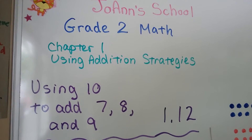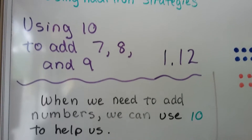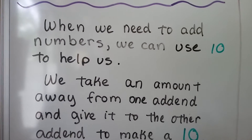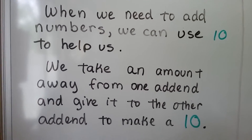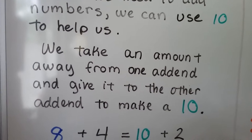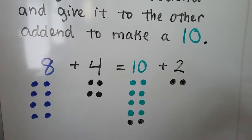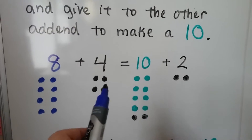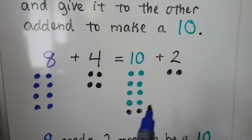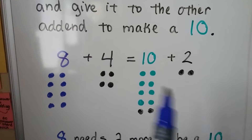Lesson 1.12: using 10 to add 7, 8, and 9. When we need to add numbers, we can use 10 to help us. We saw that in the last video — we can take an amount away from one addend and give it to the other addend to make a 10. If we have 8 plus 4, we can take two counters away from the 4 and give it to the 8. Then we'll have 10 plus 2. It's the same thing — they're equivalent, they're equal.